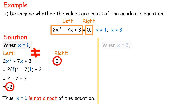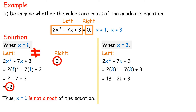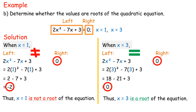When x equals 3, on the left-hand side, 2x² minus 7x plus 3, substitute 3 into x: equals 2(3²) minus 7(3) plus 3, equals 18 minus 21 plus 3, equals 0. While the right-hand side is 0. Since the left-hand side and right-hand side are the same, x equals 3 is a root of the quadratic equation 2x² minus 7x plus 3 equals 0.